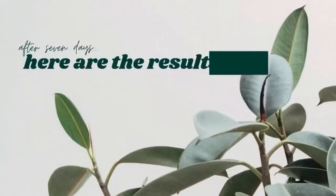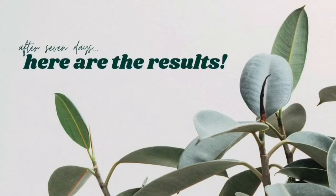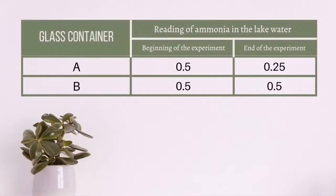And after 7 days, here are the results. If you look at glass container A at the end of the experiment, the reading of ammonia is decreasing — it's about half. And for B, there's no change at all.